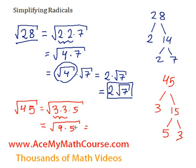So I can split this up into the square root of 9 times the square root of 5. And the square root of 9 is 3, and we're multiplying that by the square root of 5. So in mixed radical form, the square root of 45 is 3 root 5.